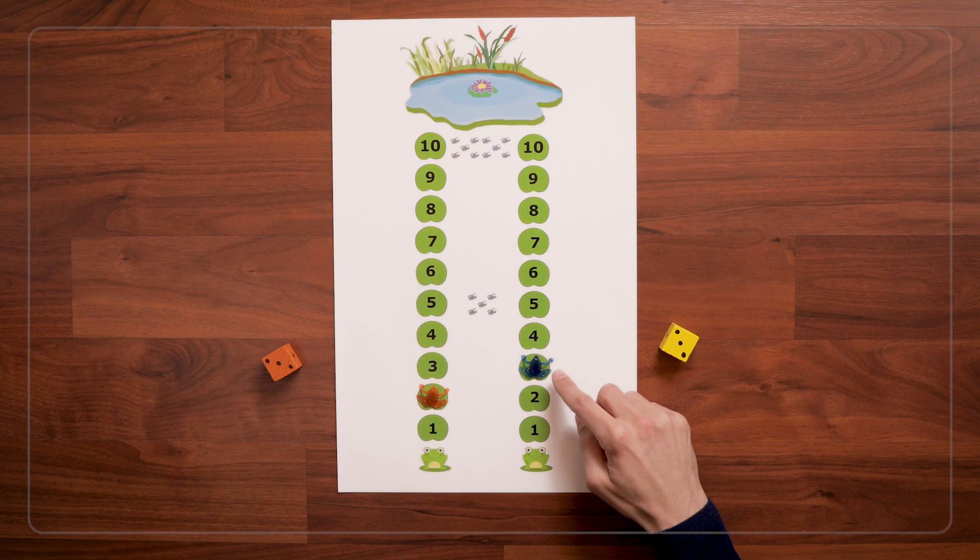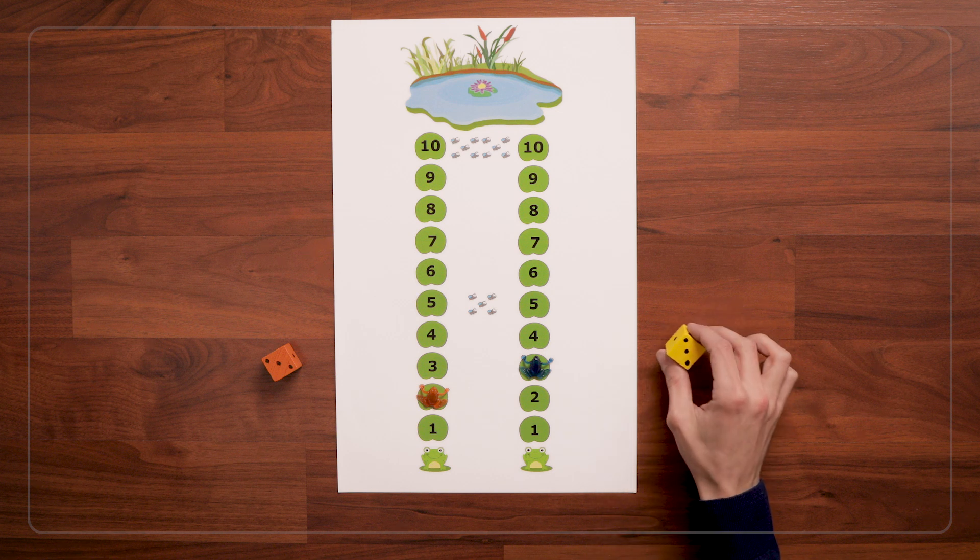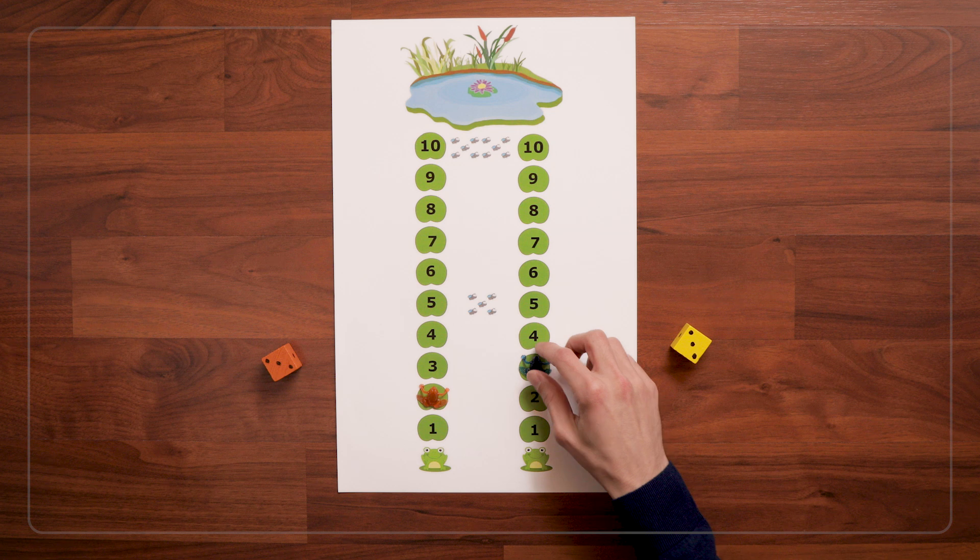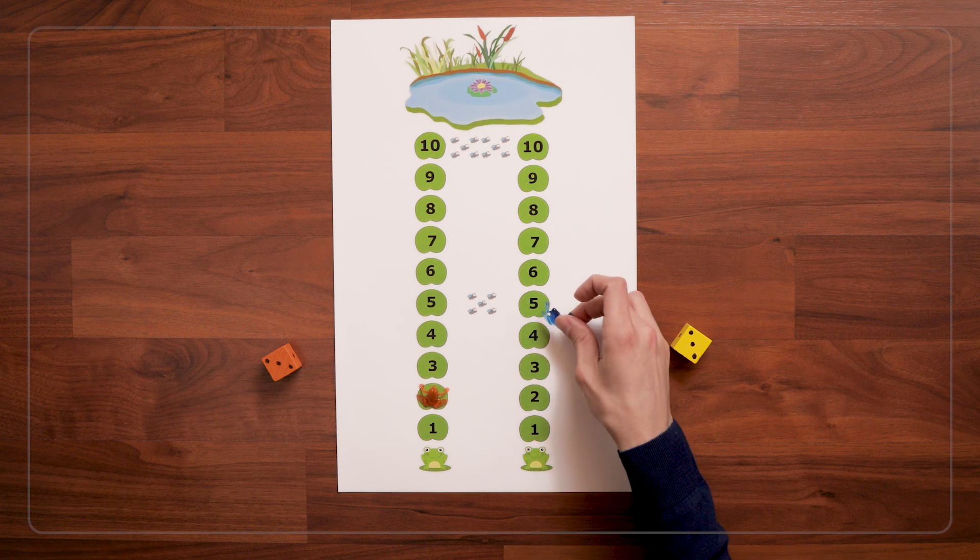So say my frog is on 3 and my partner's frog is on 2. And I roll a 3. Instead of counting 1, 2, 3 hops, I'm going to say the number that I'm hopping on. In this case, 4, 5, 6.